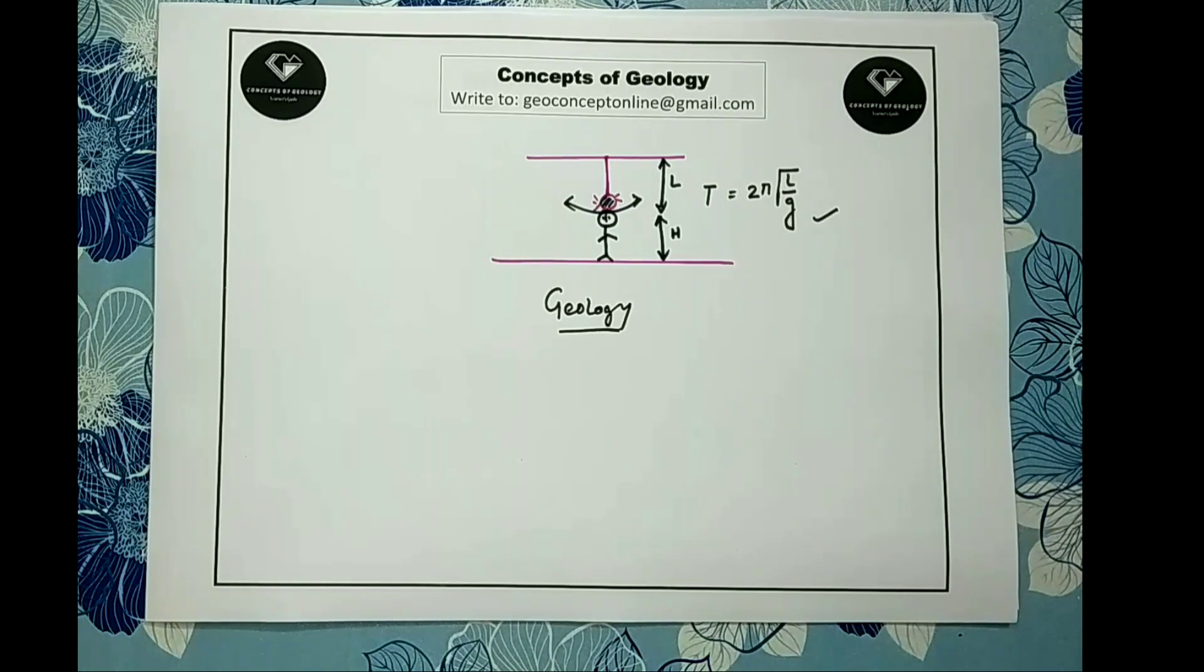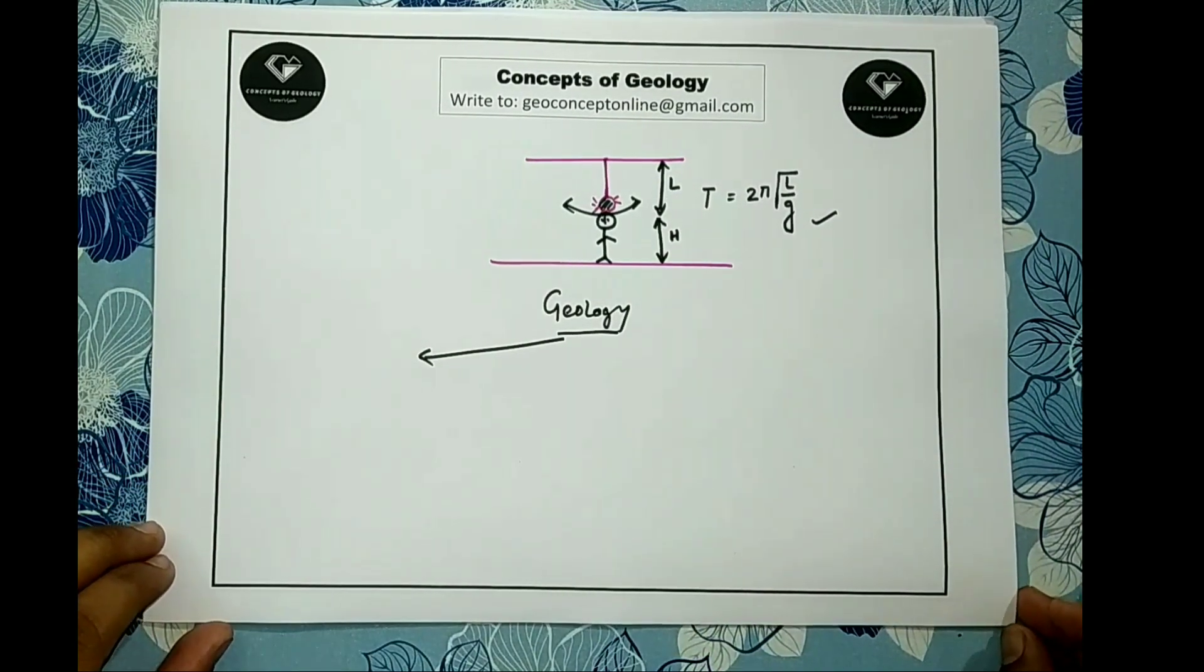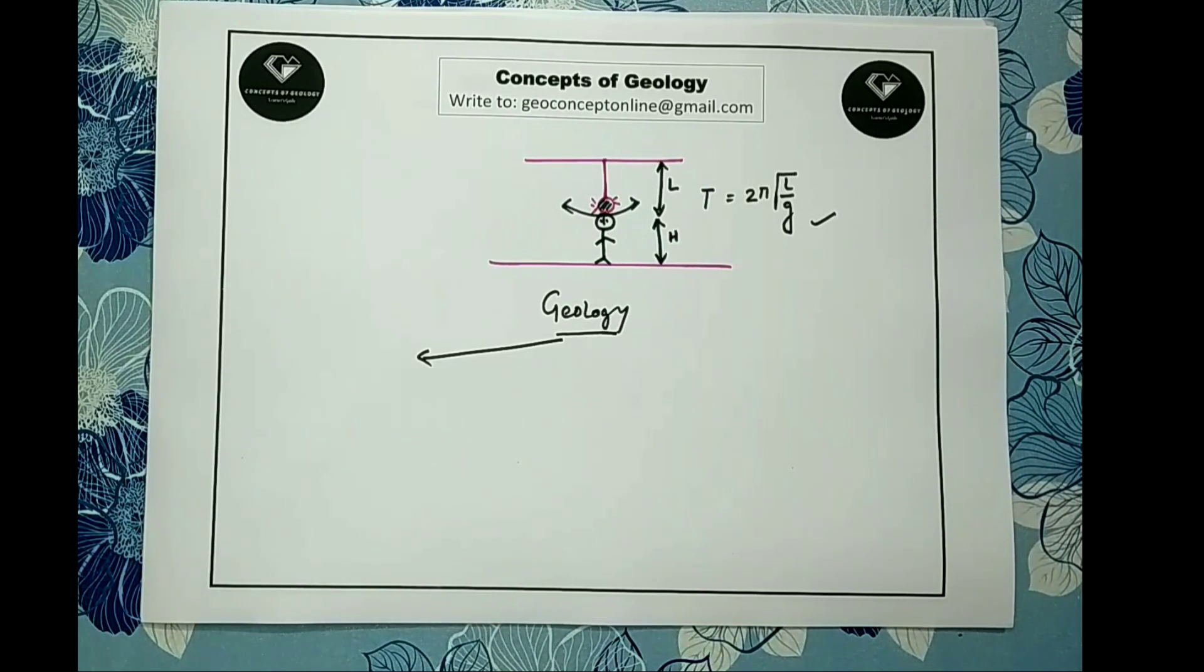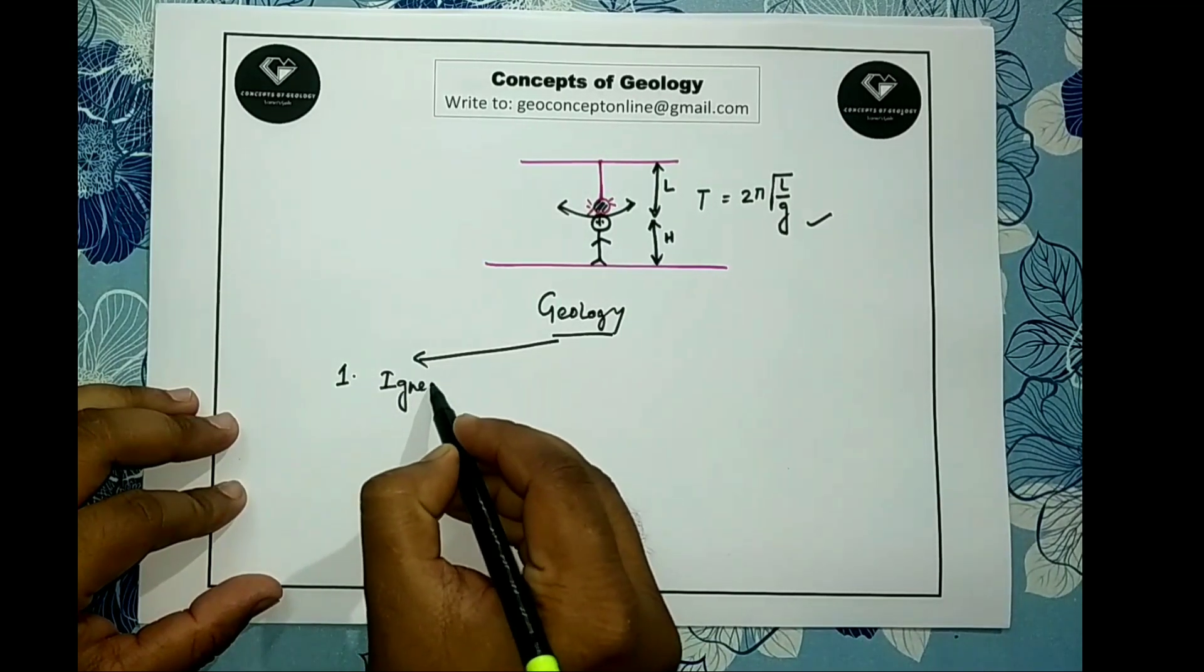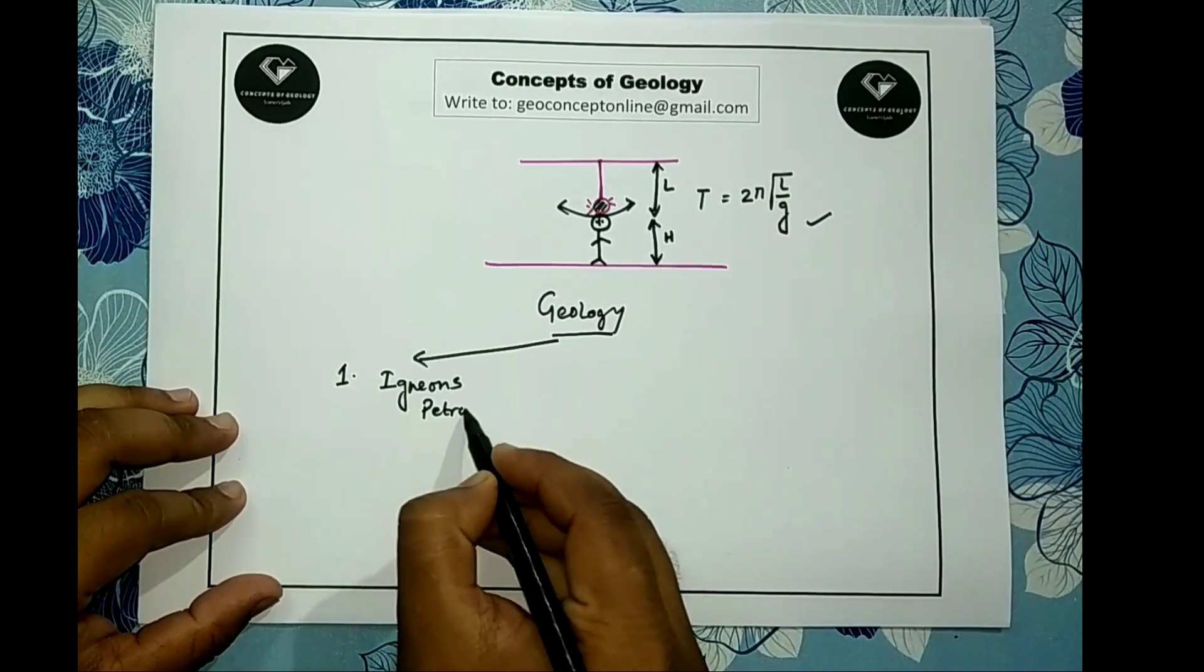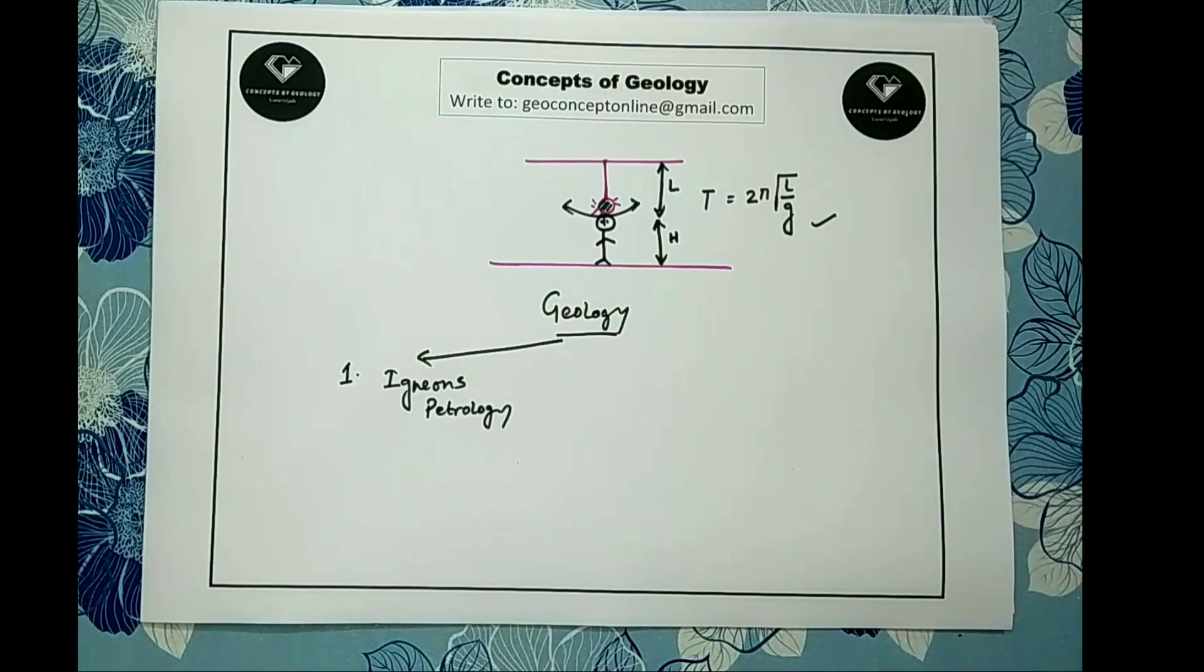First branch of our subject, the geology, is petrology. Petrology means the study of rocks. So firstly we have number one: igneous petrology. Igneous petrology is the study of igneous rock which is the parent of all rocks found in the earth. They are the first to form when the earth began to solidify from a molten state before 4.6 billion years.